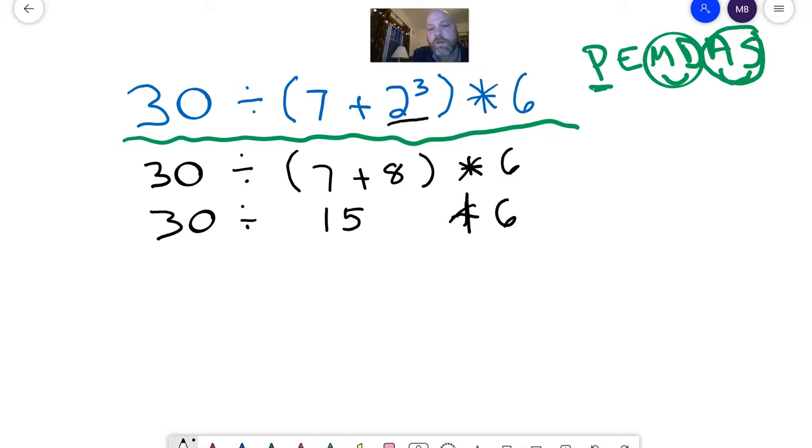15, times six. So what do I need to do next? Well, 30 - do I divide it, or do I multiply? Remember we just talked about that a second ago. I have to divide first because it comes first, left to right. So 30 divided by 15 is two, times six. Two times six equals...